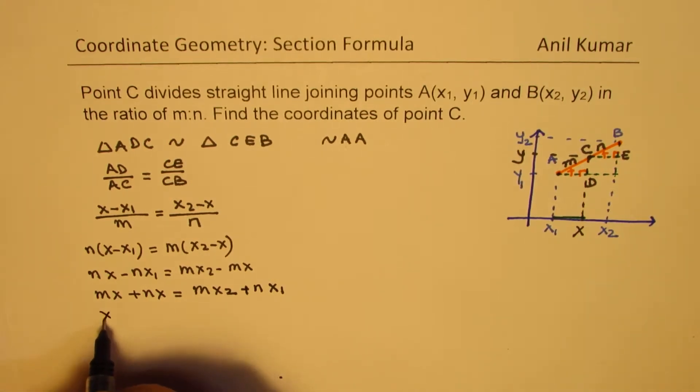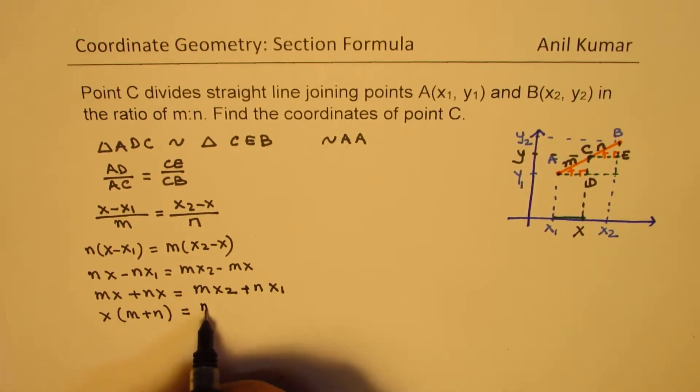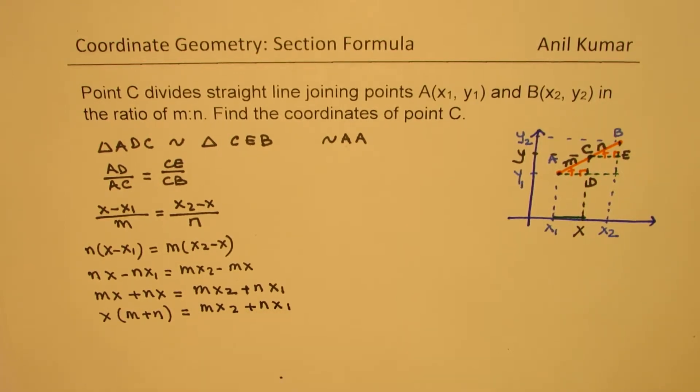Taking x common, we get x(m plus n) equals to mx2 plus nx1. And from here we can get x equals to (mx2 plus nx1) divided by (m plus n).